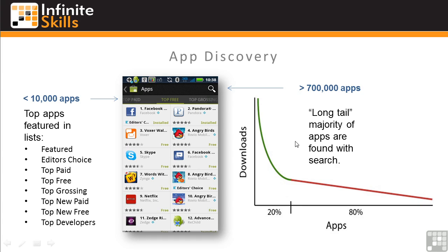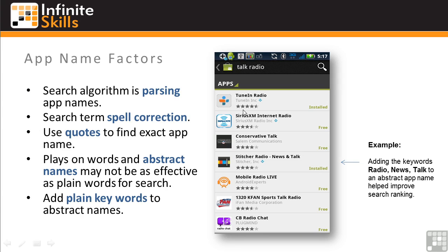So how do you increase your chances of appearing near the top of an app search? One important factor is your app name, and this can make a big difference in the success of your app. The search algorithm is parsing app names and performing spell correction, so for users to find a specific app they have to use quotes around the words in the name — and most searchers won't do this. One impact is that plays on words and abstract names may not be as effective as plain words for search purposes.